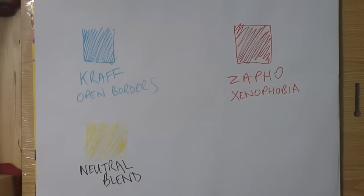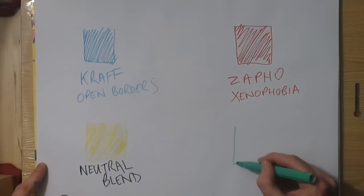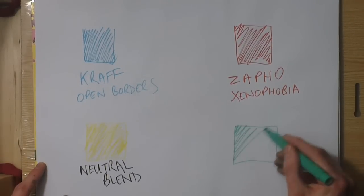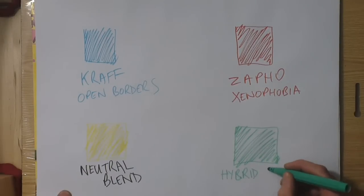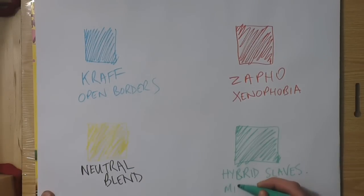There have also been attempts at cherry-picking certain genetic qualities from the branches of the human family tree, to engineer designer people for use as slaves or proxies for either side of a blue-red duality.